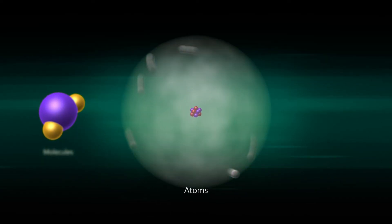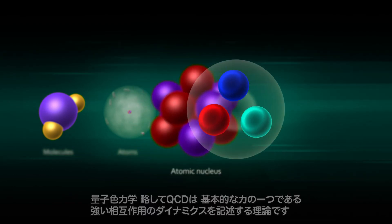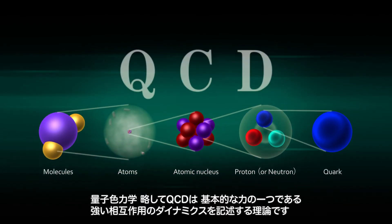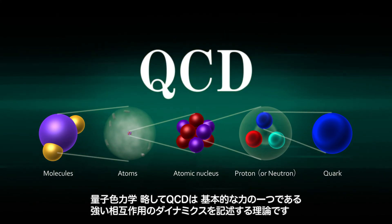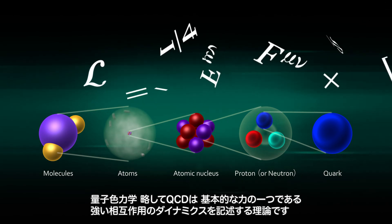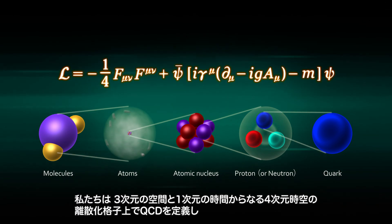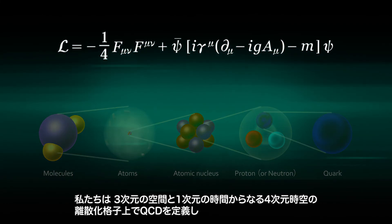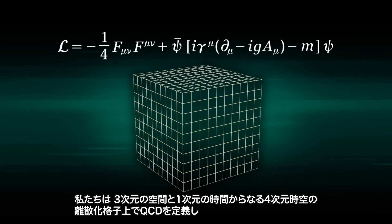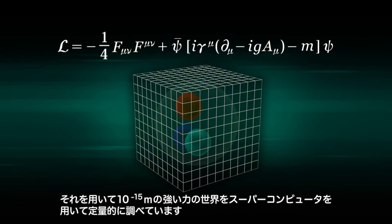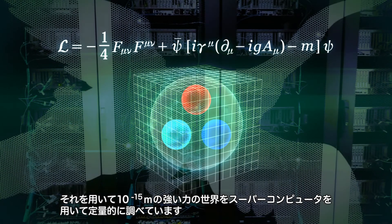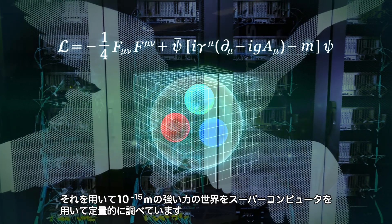What are the elementary particles or smallest constituents of matter? What are the most fundamental interactions? These are the questions particle physics tries to answer. Quantum chromodynamics, or QCD, is the theory to describe the dynamics of the strong interaction, which is one of the fundamental forces. We define QCD on a discretized lattice of four-dimensional space-time, consisting of three dimensions of space and one dimension of time, and use it to quantitatively examine the 10 to the minus 15th meter world of strong forces using supercomputers.